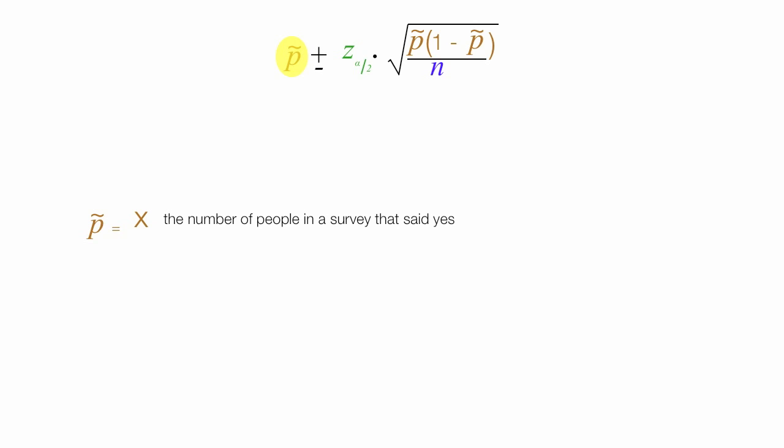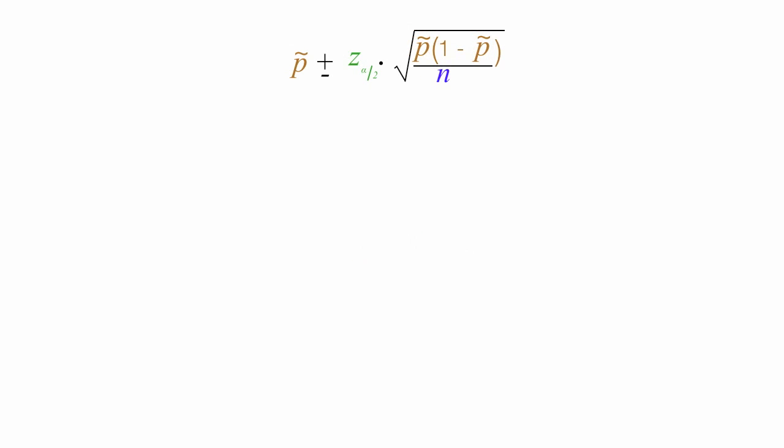For example, the number of people in a survey that said yes, divided by the sample size, or how many people you surveyed total. And this is roughly a percent, just think of it roughly as a percent, not exactly, but kind of.